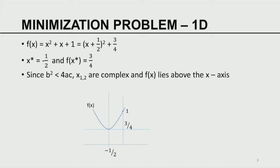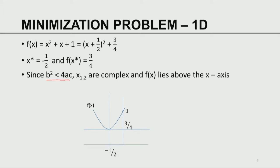Continuing the 1D minimization example: consider f(x) = x² + x + 1, which can be written as (x + 1/2)² + 3/4. In this case x* = −1/2 and f(x*) = 3/4. Since b² < 4ac, x₁ and x₂ are complex and f(x) lies above the x-axis — it has no real intersection with the x-axis.